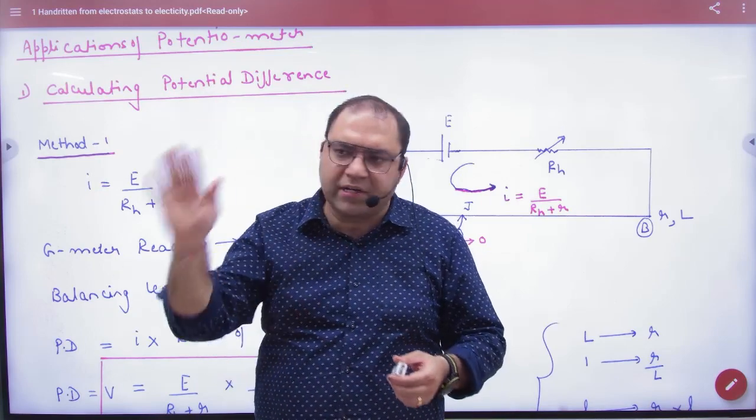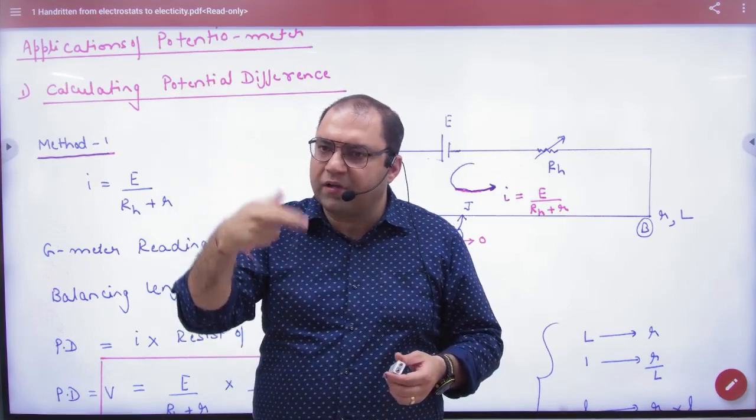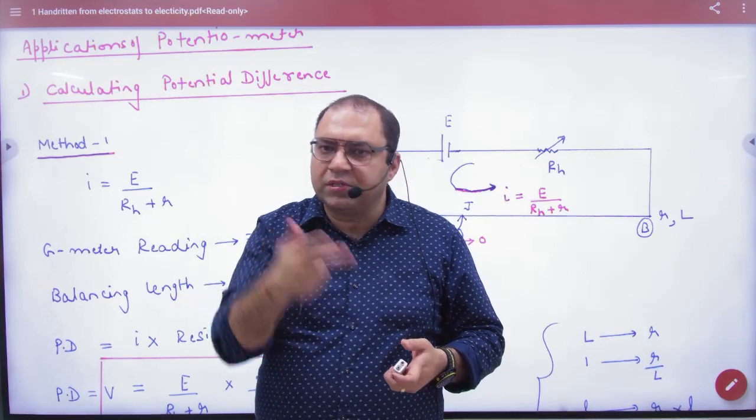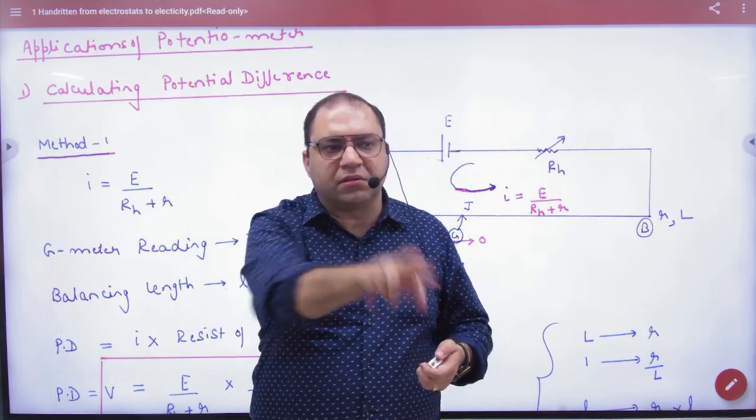First, potential difference circuit measure. The second is EMF comparison. And the third is the internal resistance of the cell. Let's see all three.